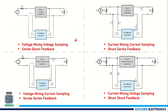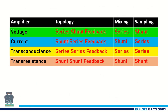To summarize all four configurations: series-shunt feedback gives voltage mixing and voltage sampling; shunt-series feedback has shunt at the input and series at the output; series-series feedback is series at both input and output; and shunt-shunt feedback is parallel at both sides. When representing these, the first word corresponds to mixing and the second word corresponds to sampling. For mixing, if it is series it means voltage; for sampling, if it is series it means current. Remembering these two rules makes it easy to recall any of the four configurations.